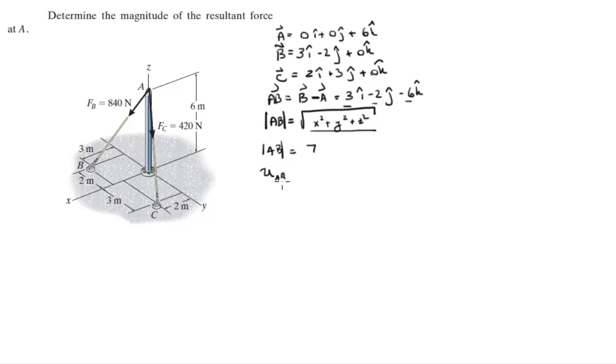So dividing these three values by seven is gonna give you the unit vector, which comes out to be 0.429 I minus 0.286 J minus 0.857 K.